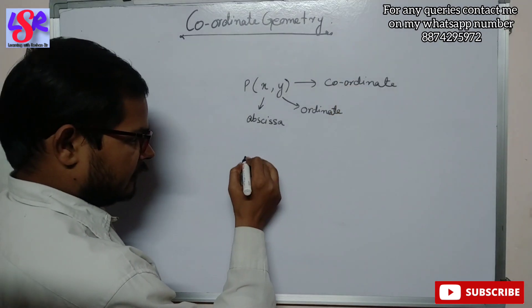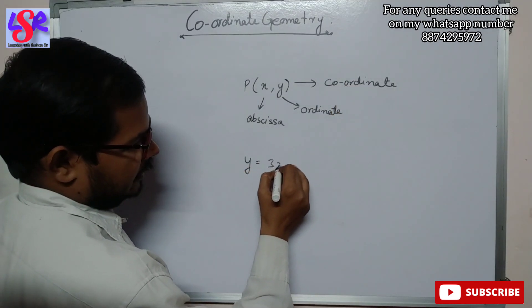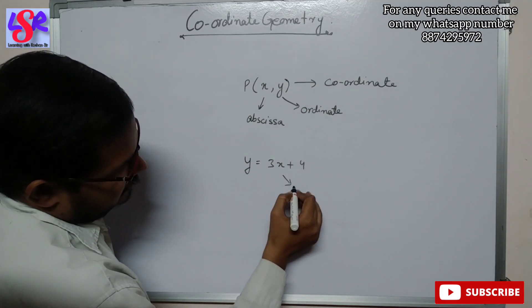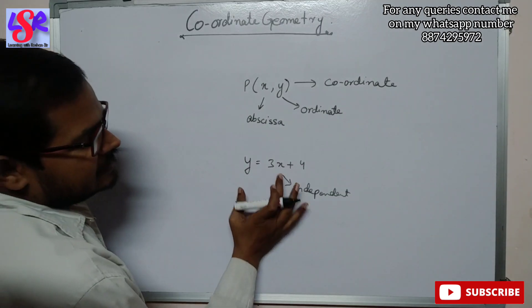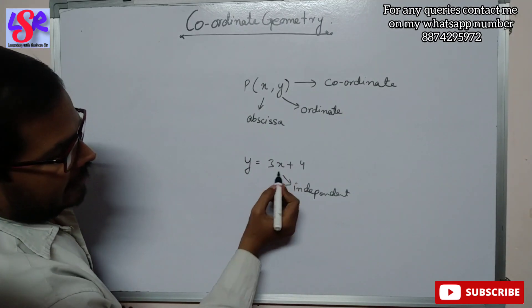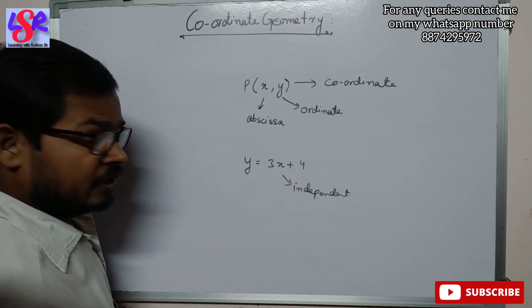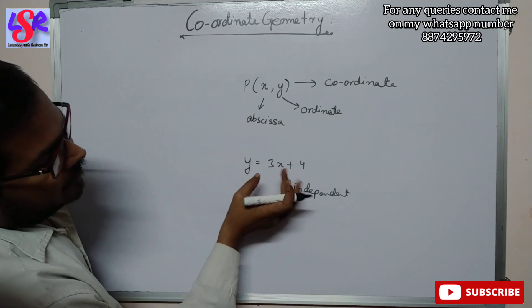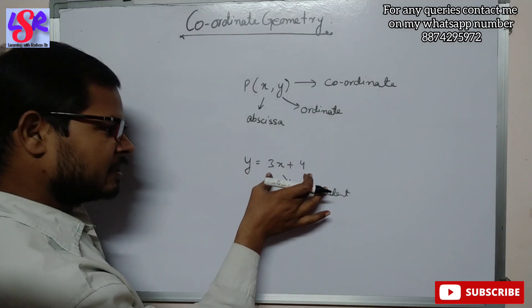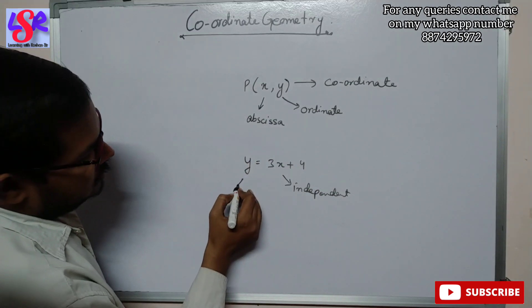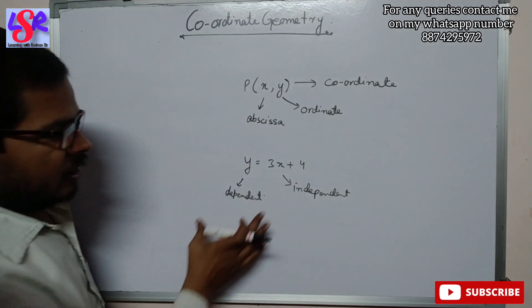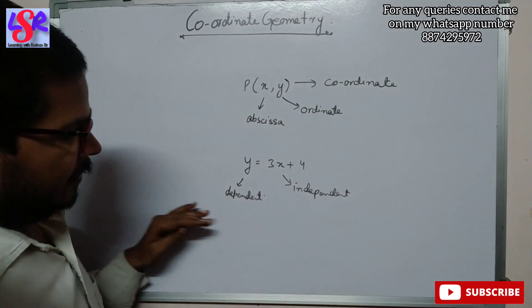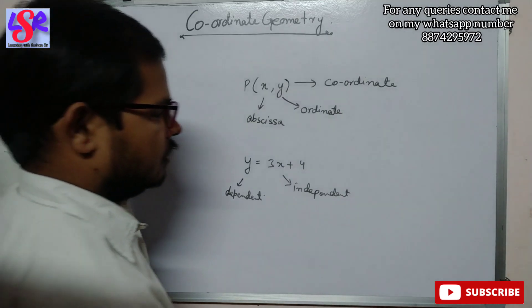Now suppose if we have an equation y equals to 3x plus 4. Here x is the independent variable, because we can have any value of x — any natural number or any rational number. But y's value depends on x; when x's value is placed, we will get y's value. So y is the dependent variable. Whenever we have a relation between two variables, the one on the left side is dependent and the one on the right side is independent.